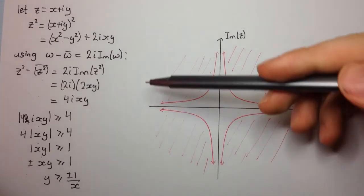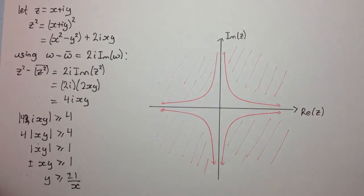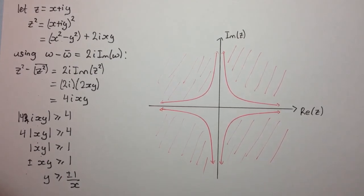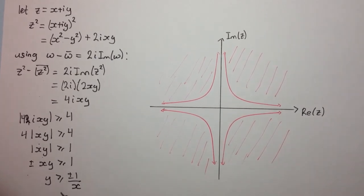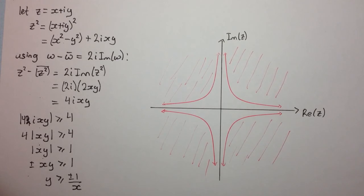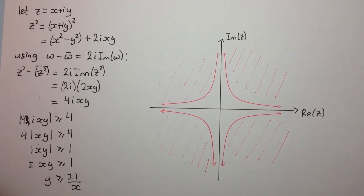With all these algebraic locus problems, you just usually let z equal x + iy, then work your way into something more familiar, and sketch that fairly easily. I hope you enjoyed the video — make sure you subscribe to be up to date with all the videos I release. Thanks for watching.